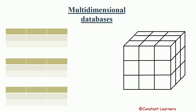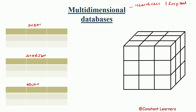Let's consider the central theme of this database to be a healthcare system — a hospital. Suppose this hospital has a branch in Dubai, a branch in Sharjah, and a branch in Abu Dhabi. This table is a dimension table. Suppose this layer is for Dubai, this layer is for Sharjah, and this layer is for Abu Dhabi.